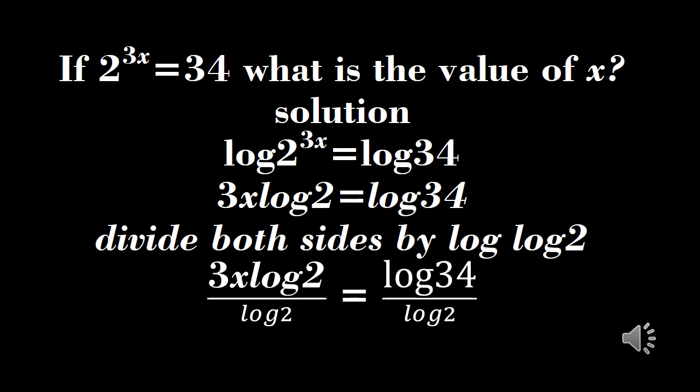If 2 raised to power 3x equals 34, what's the value of x? The first thing we do is to take log of both sides. So we take log of both sides, we have log 2 raised to power 3x equals log 34. Then this will give us 3x log 2 equals log 34.